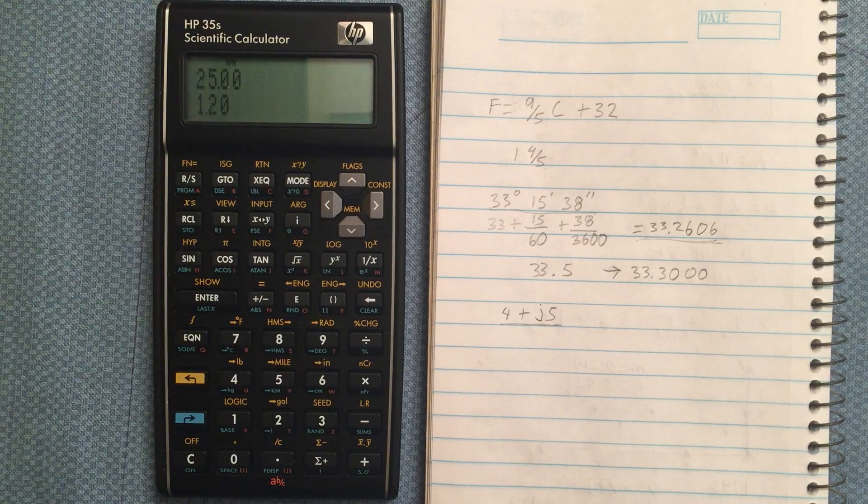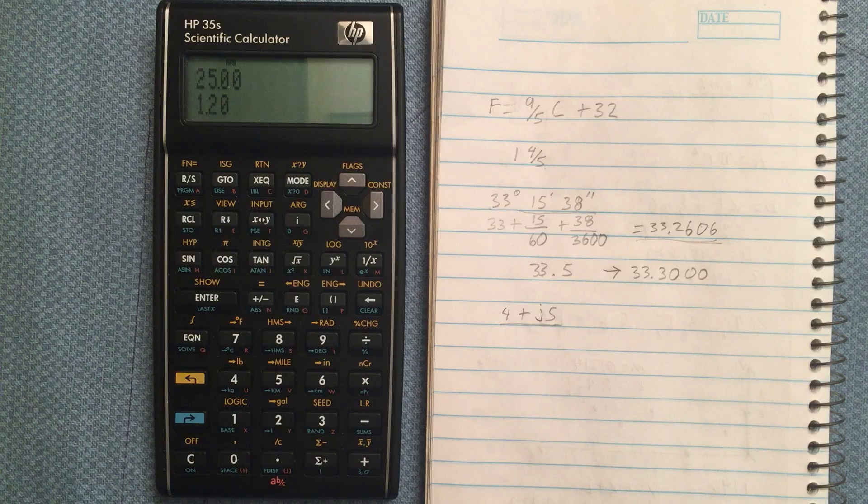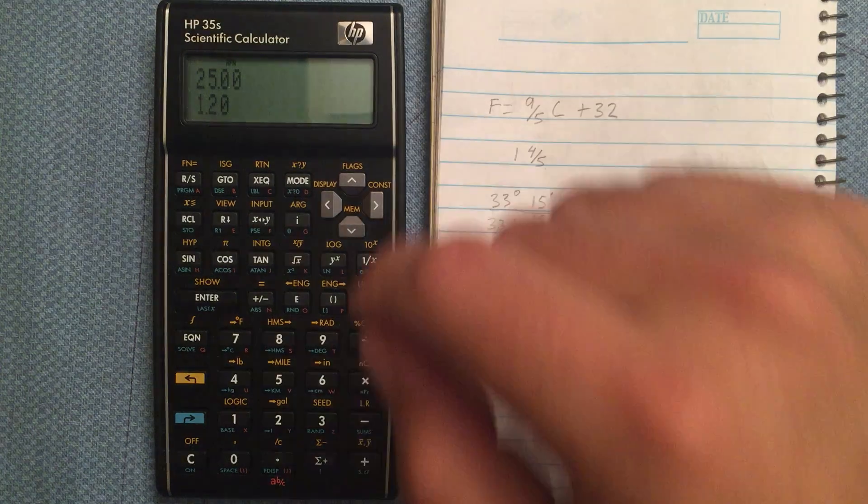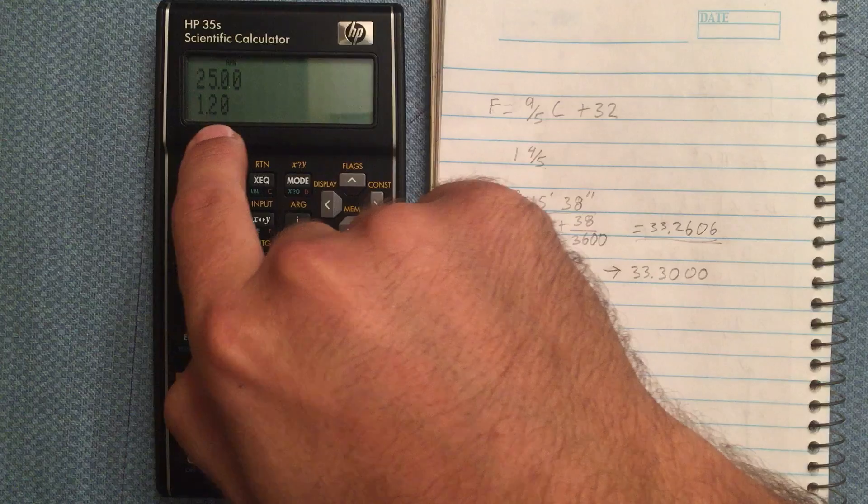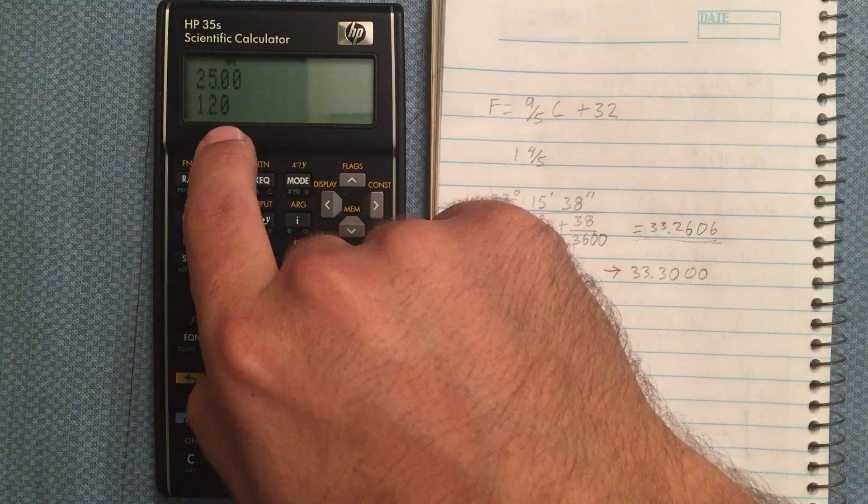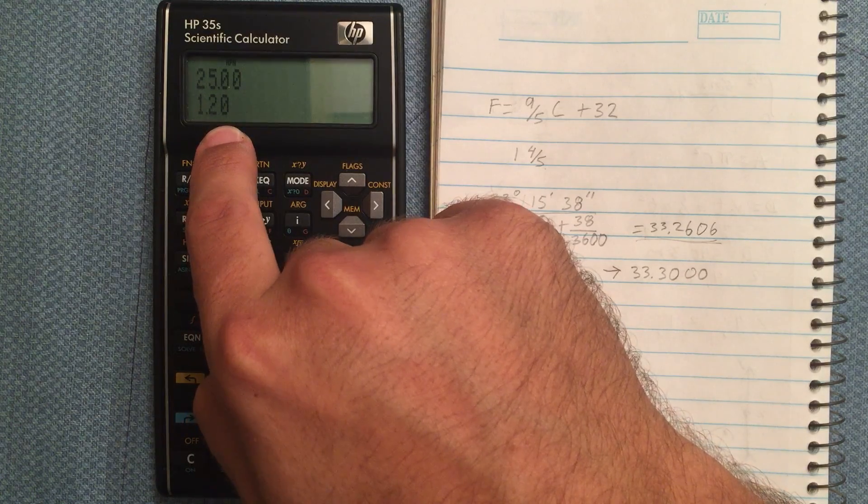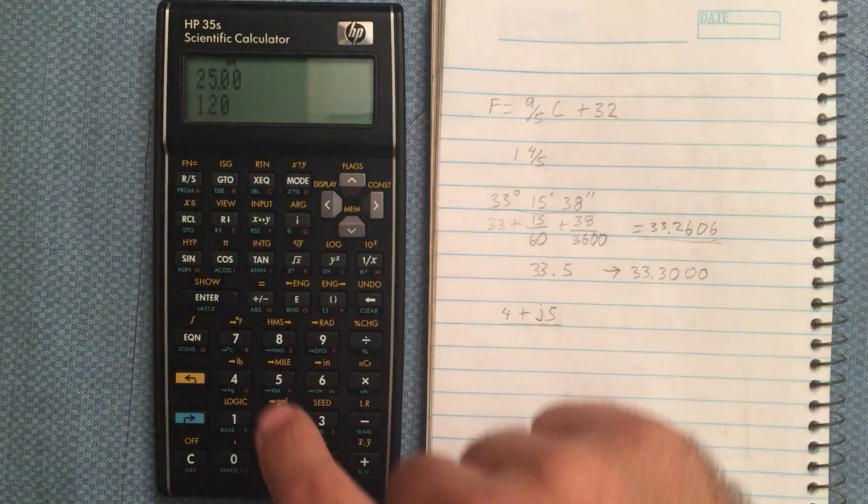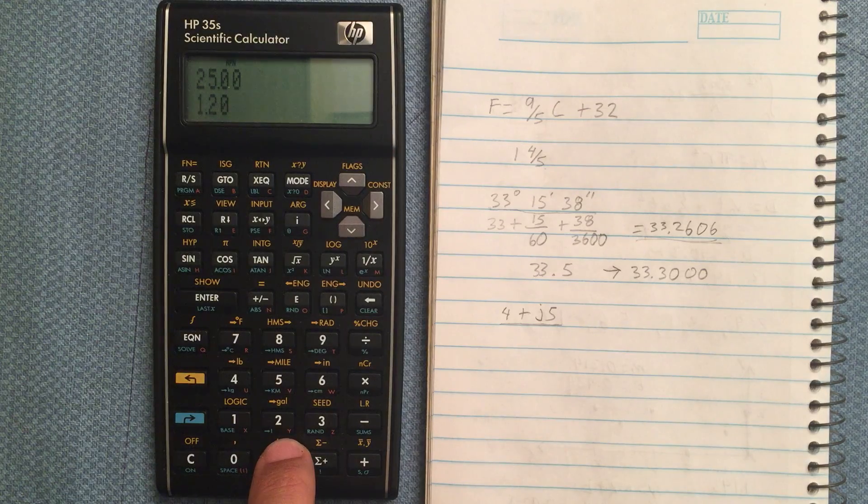Now you can also swap a value from the variable you had stored into the x-register. So right now I have 1.2 in the x-register, and then in the y variable we have stored 25.